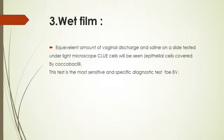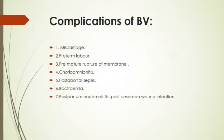Bacterial vaginosis: the most sensitive and specific diagnostic test is the whiff test, done by adding an equivalent amount of vaginal discharge to saline on a slide and examining under light microscope. In this case, clue cells are seen — epithelial cells covered by coccobacilli. Complications of bacterial vaginosis during pregnancy include release of prostaglandins stimulating uterine contractions, leading to preterm labor, rupture of membranes, premature rupture of membranes, secondary infection leading to chorioamnionitis, post-abortal sepsis, and postpartum endometritis.